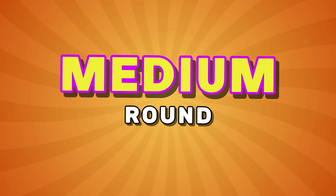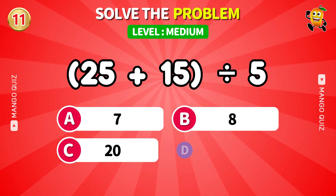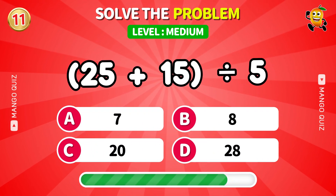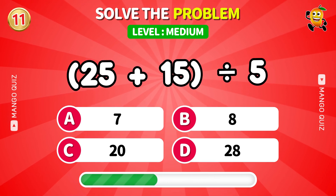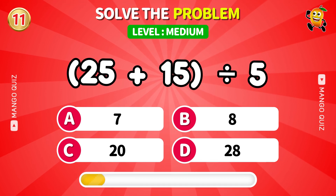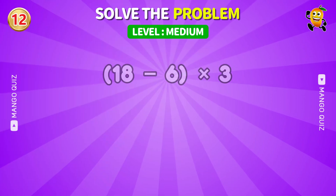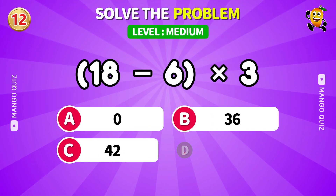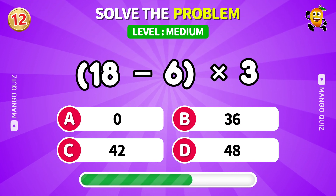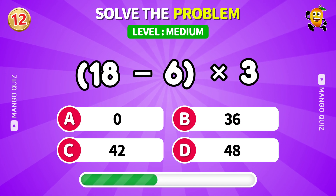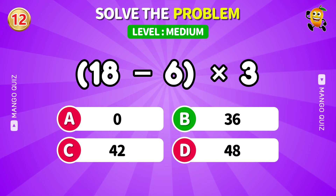Let's level up the challenge. Add 25 and 15 then divide by 5. Answer: 8. Next: subtract 6 from 18 then times 3. Answer: 36.